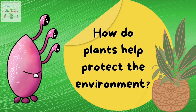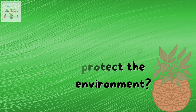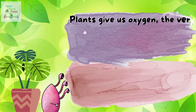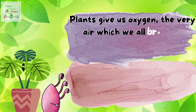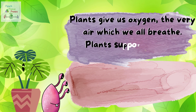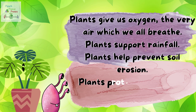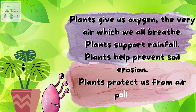Plants are great friends of our planet. So let us see how do plants help protect the environment? Firstly, plants give us oxygen, the very air which we all breathe. Secondly, plants support rainfall. Plants also help in preventing soil erosion. Plants also protect us from air pollution. Plants are extremely important for our planet and also for our own survival.